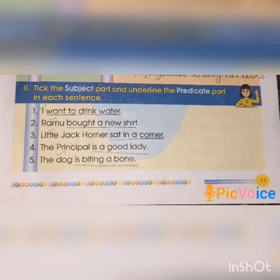Like in the first exercise, divide the sentence — identify the subject and predicate and write them in the column. That is what we have to do here: tick the subject. Second sentence: 'Ramu bought a new shirt.'